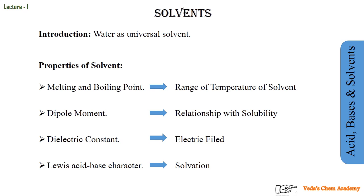The fourth property is the Lewis acid-base character. In the Lewis concept, substances are divided into two classes: Lewis acids, which accept a lone pair, and Lewis bases, which donate a lone pair. Some solvents can act like a Lewis acid as well as a Lewis base — this concept is called solvation. For example, when NaOH dissolves in water, it ionizes into Na⁺ and OH⁻.